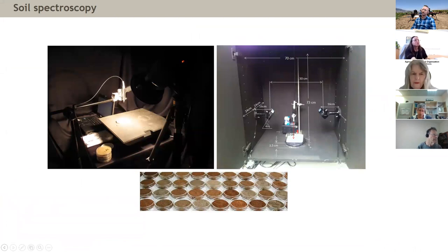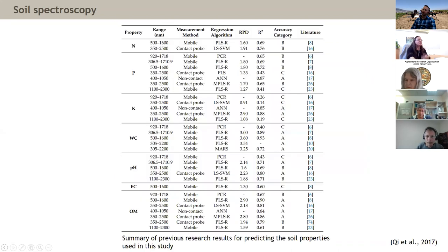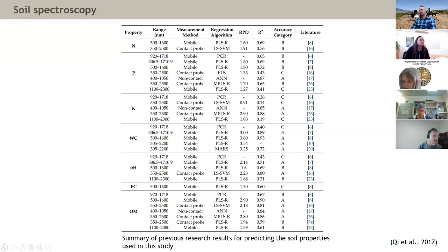There are many protocols for acquiring spectral information from soils, and standardization is very important. Just as in chemical labs there are protocols for acquiring data, we need to work in a specific way to evaluate the spectral signal. This is an example of a review we did on different soil properties — NPK, water content, pH, and EC. For each parameter, different sensors, spectral ranges, and algorithms can give totally different results, emphasizing the importance of developing standardized protocols for modeling soil spectroscopy.